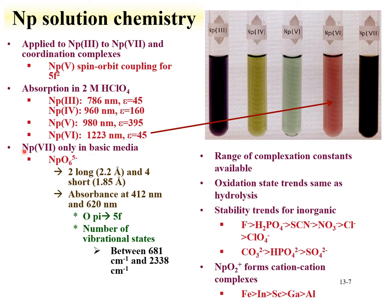Neptunium-7 is available only in basic media, and the absorbance has been examined, including vibrational states from the neptunium-oxygen bonds. A range of complexation constants have been evaluated for neptunium with a number of inorganic ligands, and the trends are similar to other metal ions. Fluorine binding is the strongest and perchlorate the weakest. As discussed with uranium, neptunium can also form cation-cation interactions, where the oxygen from neptunium can coordinate with metals ranging in strength from iron down to aluminum.